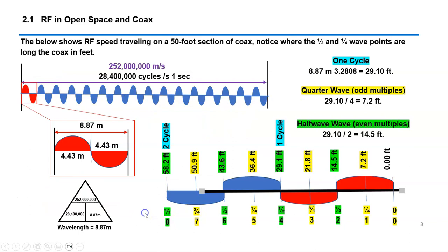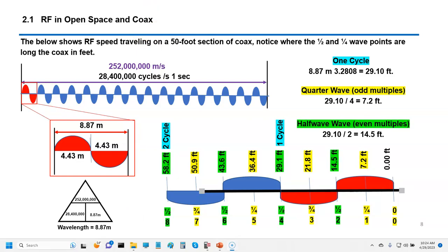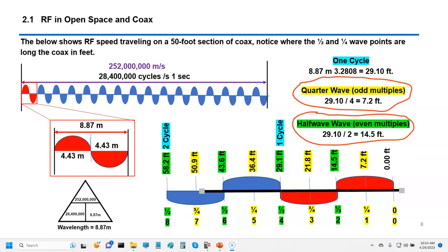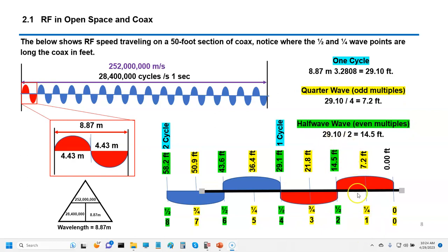On a 50-foot coax at 28,400 Hz, notice where the half and quarter wave points fall. Quarter wave multiples occur at odd multiples and half wave multiples at even multiples. At the frequency of 28,400, every 7.2 feet is a quarter wave interval; 14.5 feet is a half wave interval, then 21.8 feet and 29.1 feet follow. This is important because depending on the impedance coming from your antenna, you can have some extreme voltage swings at these intervals.